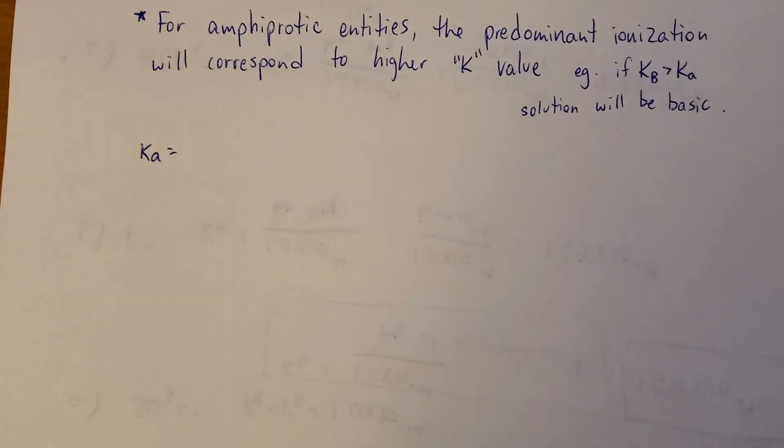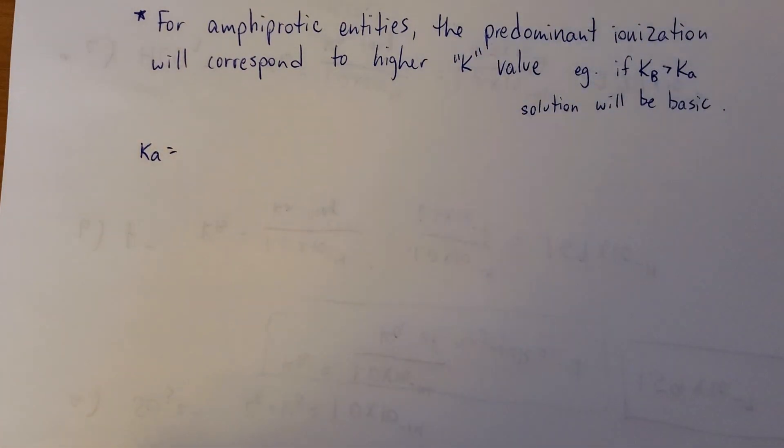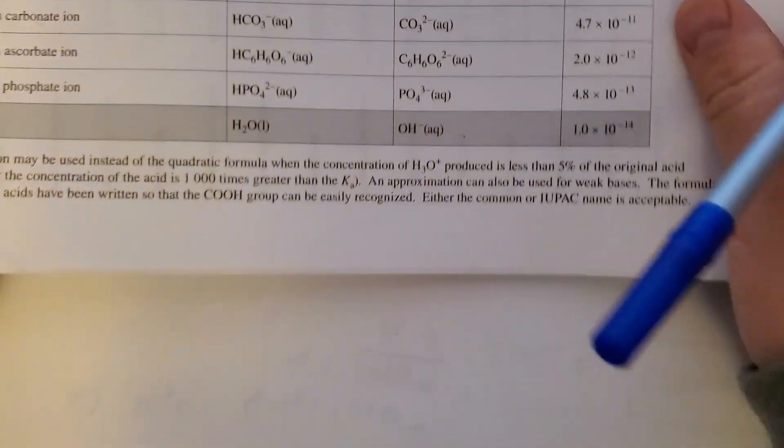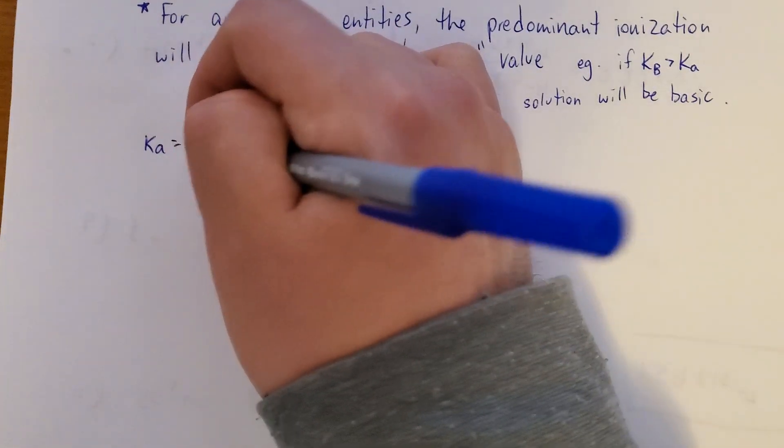All right, so to find Ka of HCO3, we'll just read it right off the booklet here. Let me find it. Okay, near the bottom, HCO3. There's Ka, 4.7 times 10 to the negative 11.